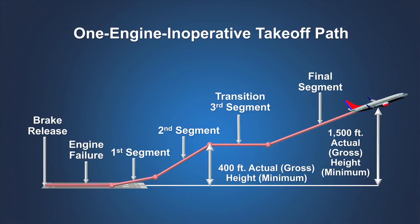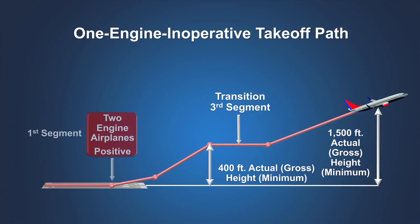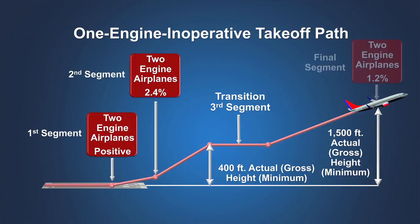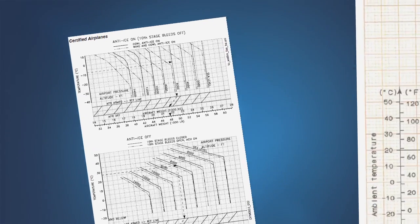Here we see the complete takeoff path from brake release until the minimum height of 1,500 feet above the runway surface. It is helpful to think of these minimum climb gradients imposed by the certification rules as a mandatory minimum level of the airplane's surplus energy condition during takeoff. This surplus energy can be used for either climb or acceleration, or some combination of the two. Since these climb gradient requirements are based on airport temperature and pressure altitude, they are not runway specific. However, choosing flap settings for a given takeoff can affect the climb limit weight.